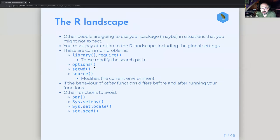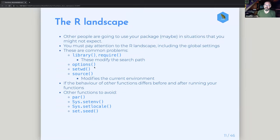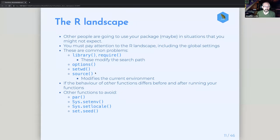Another thing they mention is to be respectful of the R landscape — settings and ways that R is running on a local machine that might not be reproducible in your package, but that your package might affect for the user. For example, you shouldn't have code like library() or require() in your package because that's going to mess with the search path. Similarly, you shouldn't mess with the user's options, the working directory, or source code in your packages. But there are cases where you might need to do some of those things, and the best practice is to make sure you clean up after yourself if you do.